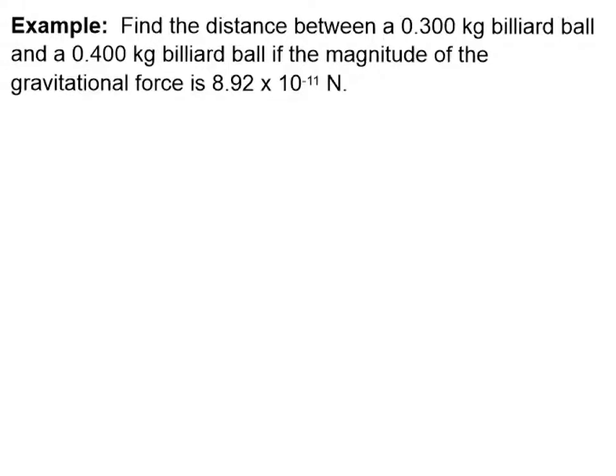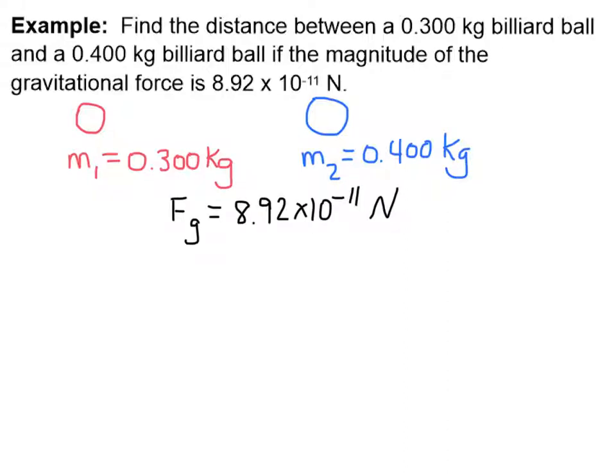So let's do an example problem together. Find the distance between a 0.300 kilogram billiard ball and a 0.400 kilogram billiard ball. If the magnitude of the gravitational force is 8.92 times 10 to the negative 11th newtons. Let's write down what we know. Let's say the mass of that first ball is 0.300 kilograms, and the mass of the second ball is the larger one. We also know the gravitational force. And we are asked to find the distance between the two balls r. Remember r is the distance between the two from the center of the spherical mass to the center of the other spherical mass.